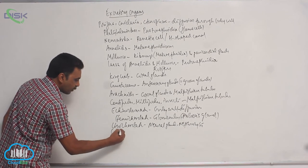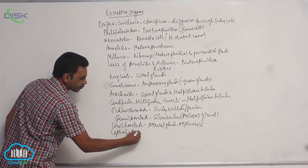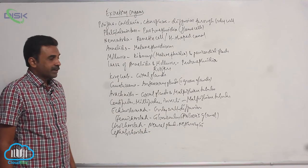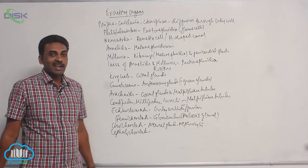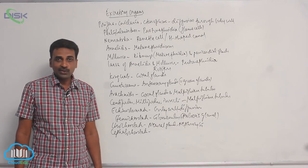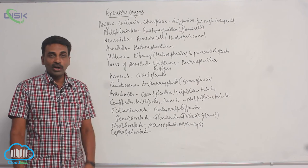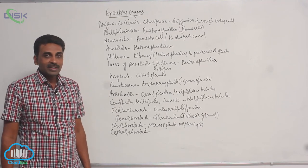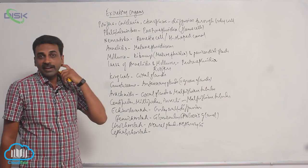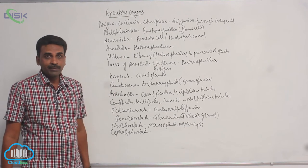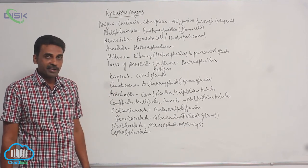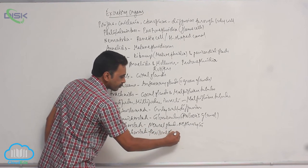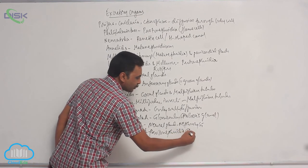When you come to cephalochordates — which include Amphioxus or Branchiostoma, commonly called lancelets — attached to the pharynx in the atrial cavity, you can find protonephridia in the form of solenocytes.